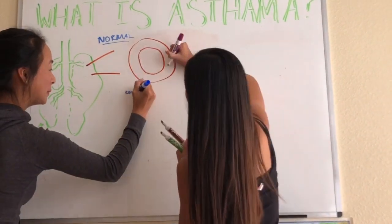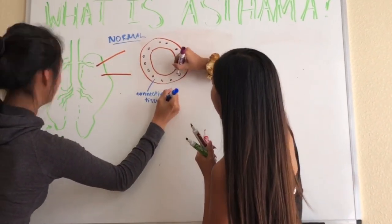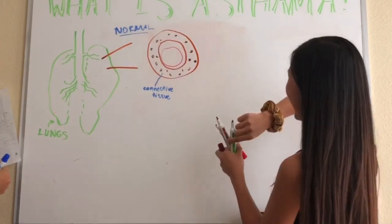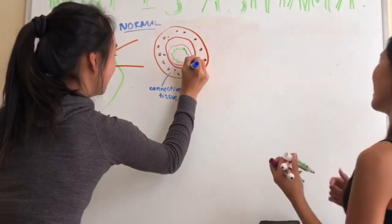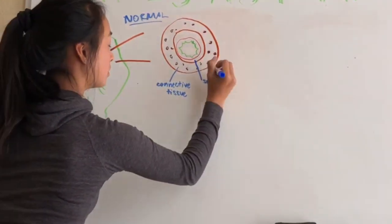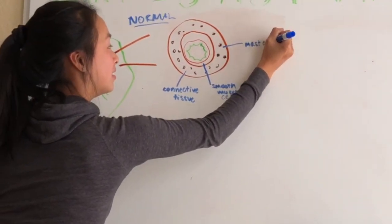This is someone who has normal lungs. There is an outside layer called the connective tissue, and inside the connective tissue are these things called mast cells. Inside of that is a smooth area called the smooth muscle cells. And inside of that is the mucus. And inside of that is a space called the lumen, where the air actually travels through.